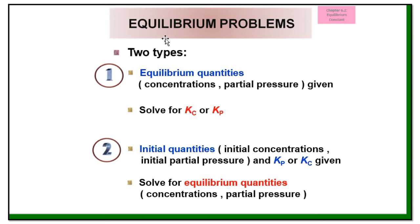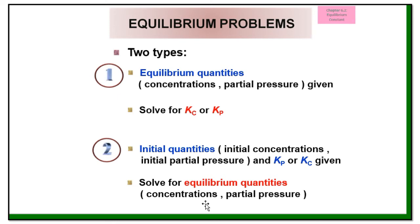For these equilibrium problems, there are two types. The first one is equilibrium quantities — meaning the concentration or partial pressure are given, then solve for Kc or Kp. The second type is when you are given Kc or Kp and you have to solve for the equilibrium quantities to find out what is the partial pressure or concentration. Let's check a few examples.